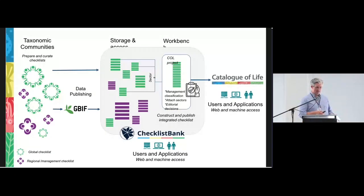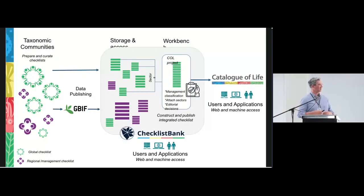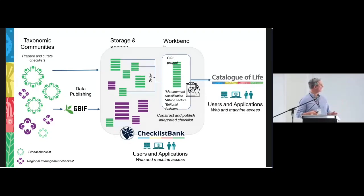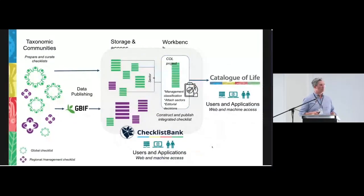At the data provider level — the level at which taxonomic editing really takes place — what you see is a scattered landscape. Many taxonomists use their own systems. Some use Word files or Excel files, others have their own databasing systems and even websites. Some are really making use of editing tools. At this data provider level, in all honesty, we don't know much about the quality assurance and quality control processes — everybody does that by themselves.